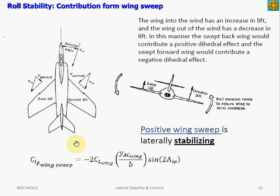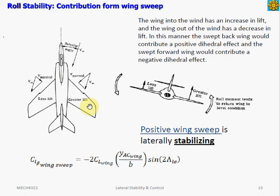The contribution from wing sweep: positive wing sweep — also called swept back wing — is laterally stabilizing. When the aircraft is sideslipping, the low wing toward the sideslip experiences higher normal velocity perpendicular to the wing's leading edge compared to the other wing. The higher velocity on the low wing increases lift on that wing, so the aircraft rolls back to wings level position. The empirical equation for CL_beta contribution from wing sweep is also a negative number.